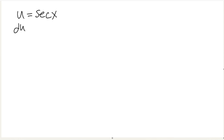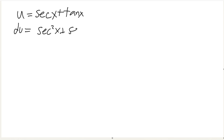Another thing: if u equals secant x plus tangent x, then du is equal to secant squared x plus secant x tangent x. But then you can factor out secant x, and you get secant x plus tangent x — this is also u.